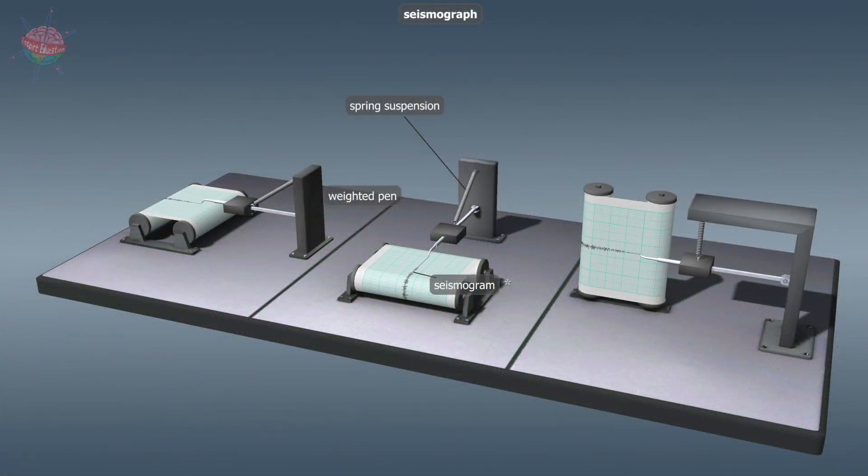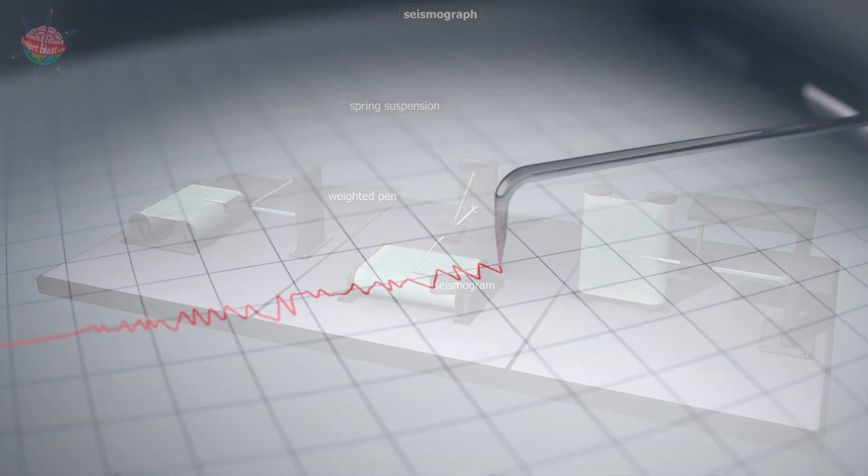A seismograph consists of a base fixed to the ground, a paper roll rotating on a cylinder attached to the base, and a weighted pen attached to a frame with a spring.